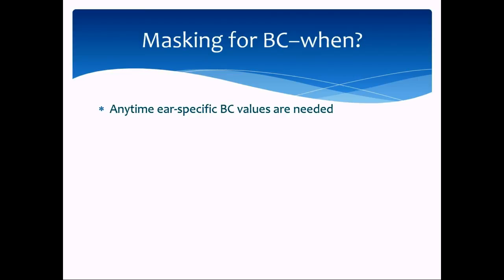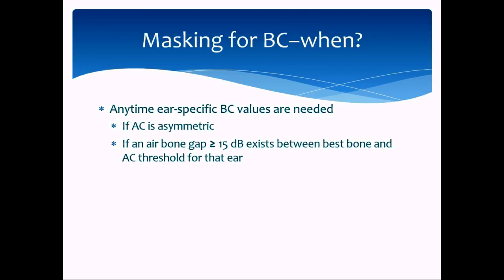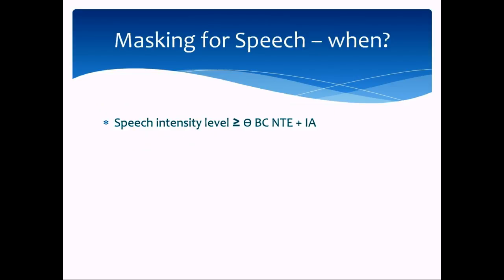For bone conduction, you mask any time you need to know specifically which ear the bone conduction threshold is coming from — so if air conduction is asymmetric, or any time an air-bone gap of 15 dB or more exists between best bone and air conduction thresholds for that ear. An air-bone gap of 10 dB is permissible, but an air-bone gap of 15 dB or more is considered problematic, and you would need masked thresholds for that ear.